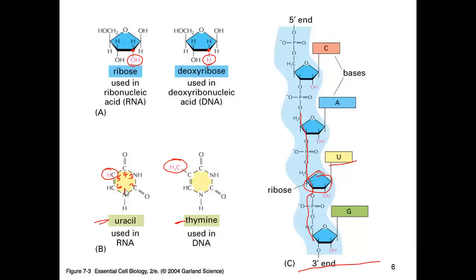Uracil is a little less stable, but it's also a little energetically cheaper to make. It costs you something to put that extra methyl group on that nucleotide. So when you are making short-lived copies of RNA, why not save the extra energy?